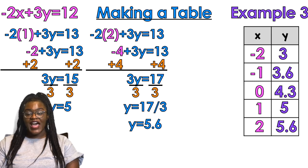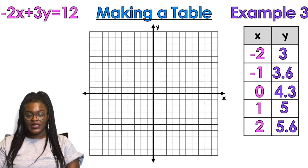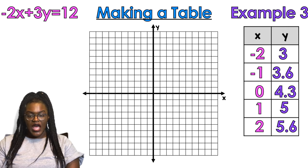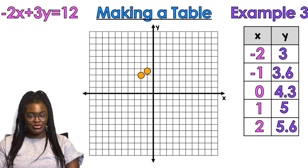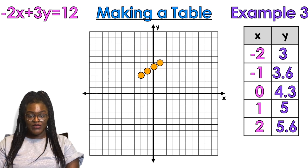Now I have all five of my values. I'm going to plot them on a graph: negative 2 comma 3, negative 1 comma 3.6, 0 comma 4.3, 1 comma 5, and 2 comma 5.6. There's my line!